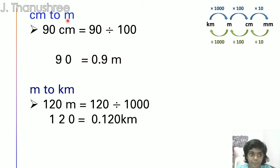Cm to m. Now 90cm equals to 90 divided by 100. Cm to m, we must divide by 100. So we can't divide, so we need to move the decimal point 1, 2, two times because there are two zeros in 100. So the final answer is 0.9m.